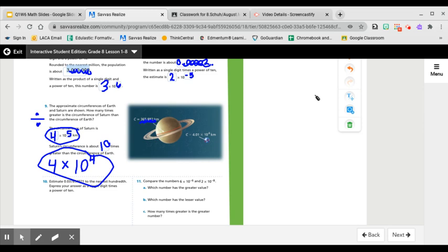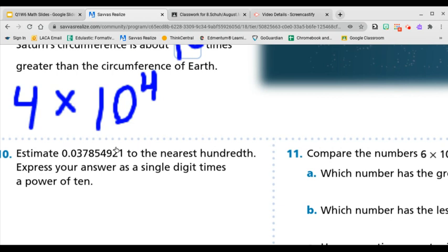Okay, number 10. Estimate 0.037854921 to the nearest hundredth. Express your answer in scientific notation. So tenths place is here, hundredths place is here, so it's currently a 3, but this 7 bumps it up to a 4, so let's rewrite it here.